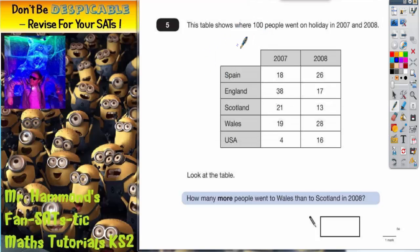Question 5, this table shows where 100 people went on holiday in 2007 and 2008. So these are the countries down the side: Spain, England, Scotland, Wales, and the USA, which is another word for America. And these are the years, so 2007 is in this column and 2008 in this column.